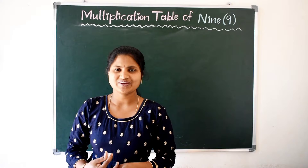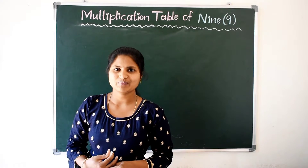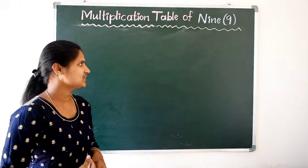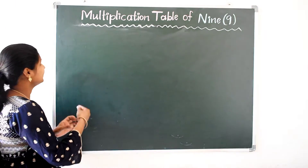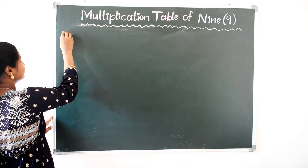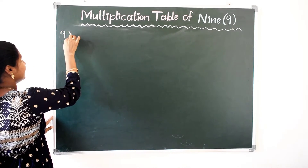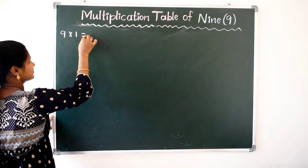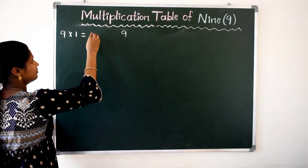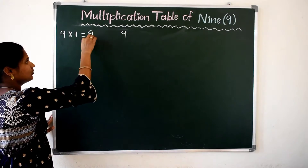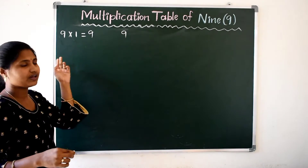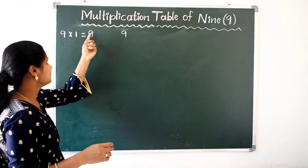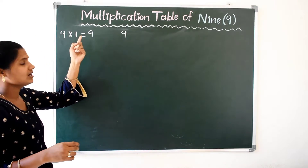Hi children, today we are going to learn about the multiplication table of 9. Ok, let us learn the 9 table. 9 one time is 9 only. Ok, 9 one time is nothing but 9. 9 ones are 9.